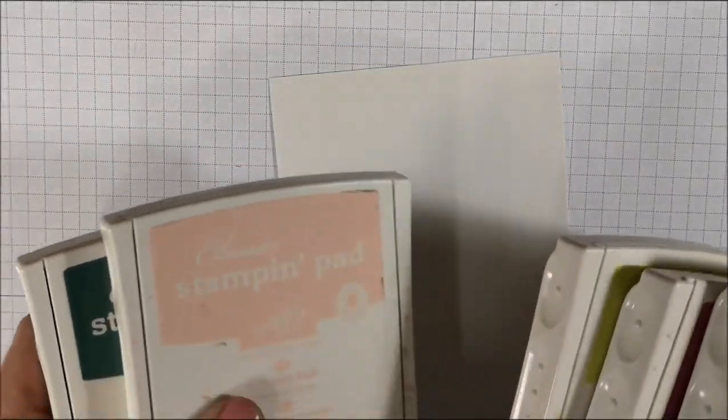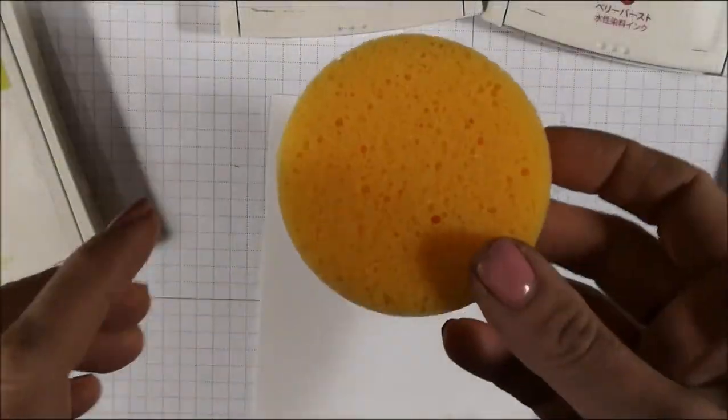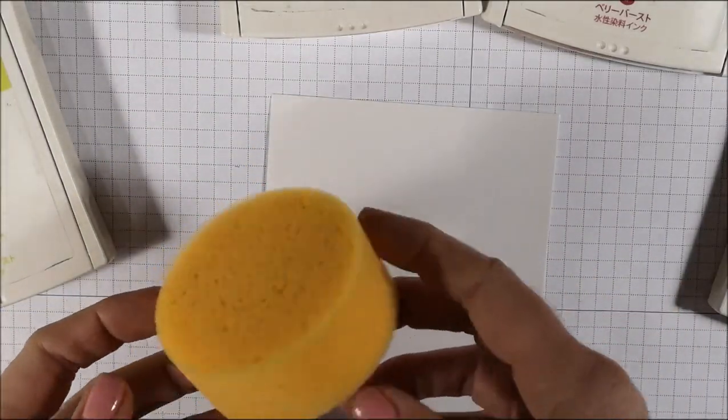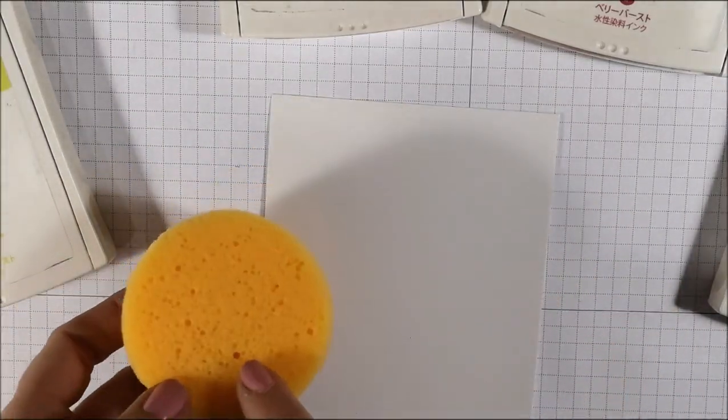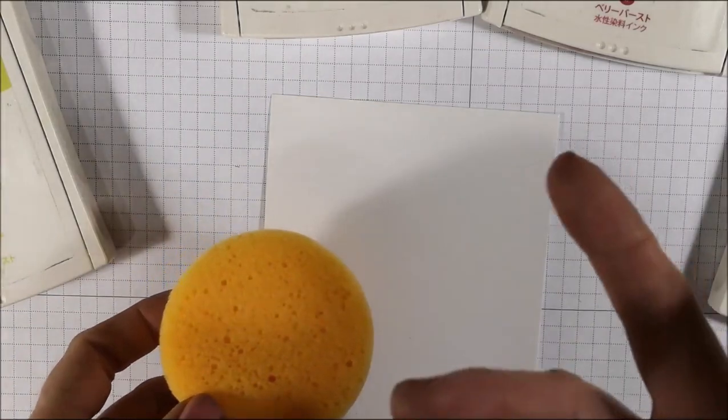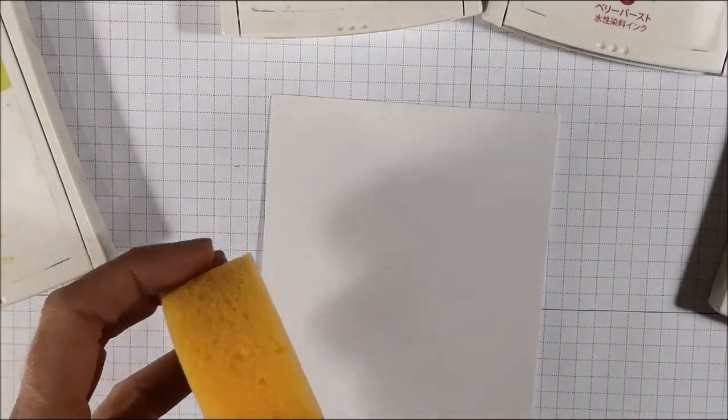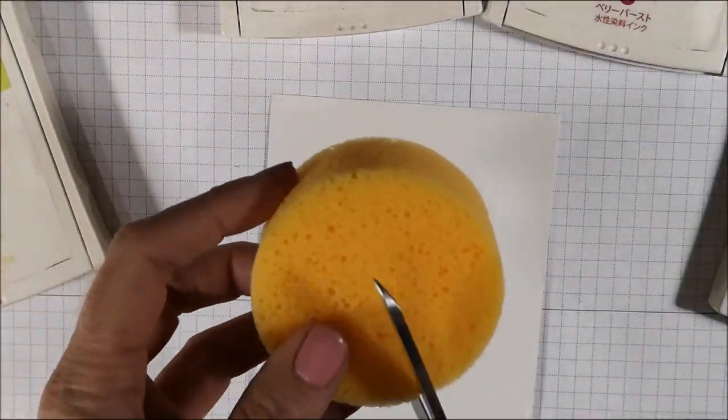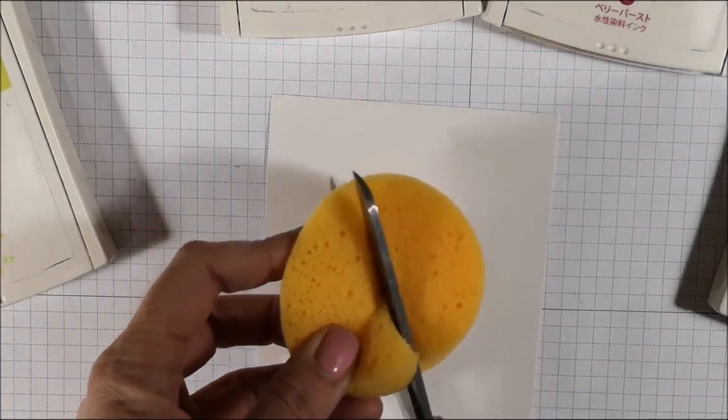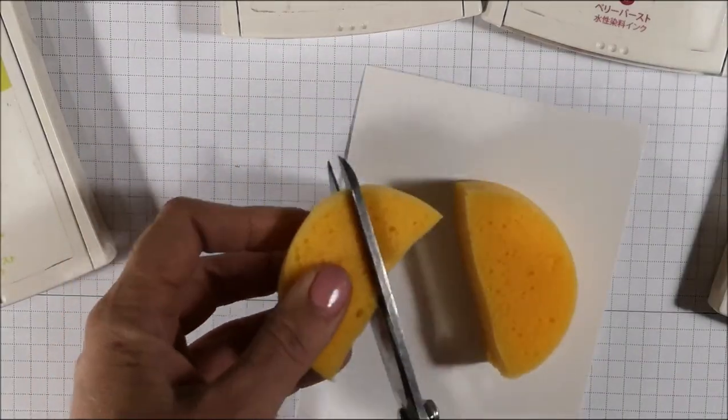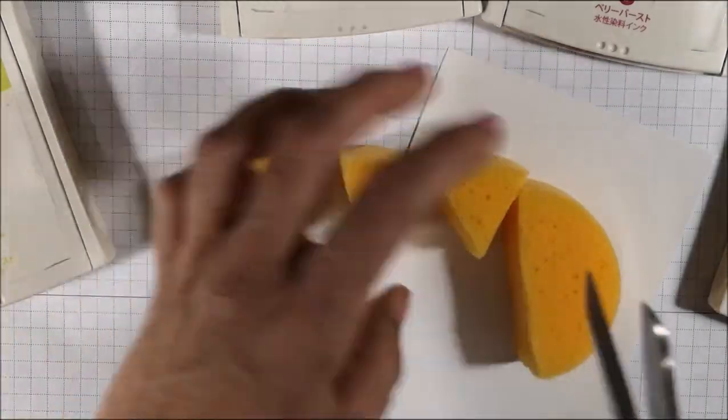So I'm probably not going to use them all on the same one. You could use our sponge daubers or you could use our stamp and sponges for this. I'm using our stamp and sponge. So you get three of these in a package and then what I'm going to do is I cut them into six pieces. I cut it right in half and then I cut them like that.